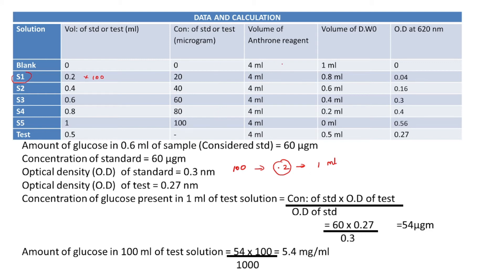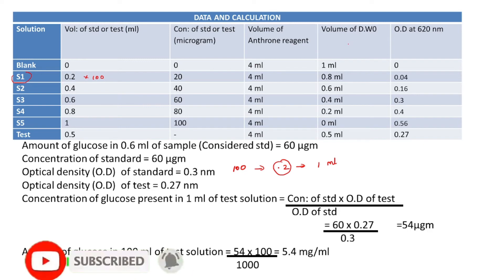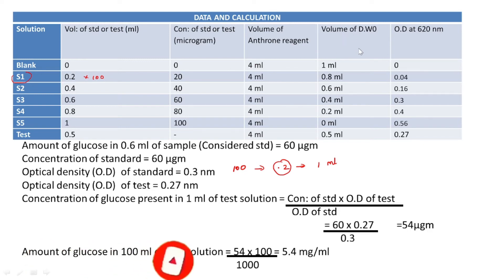The next column records the volume of anthrone reagent added to each test tube, which is 4 ml for all. The following column records the volume of distilled water added to make each standard up to 1 ml. The last column records the optical density values at 620 nanometers obtained from the colorimeter.